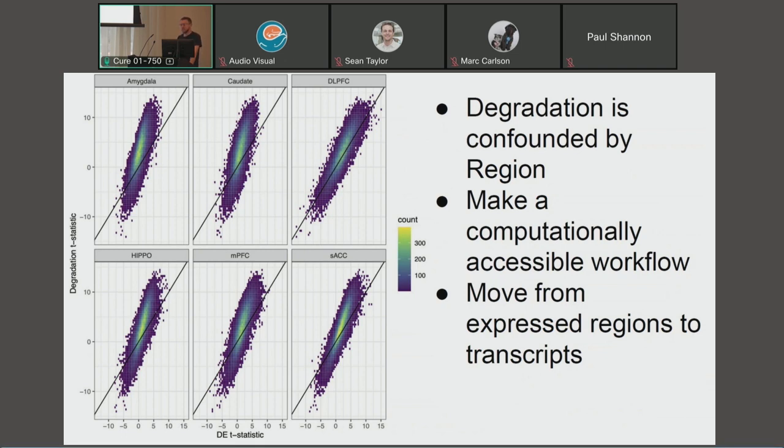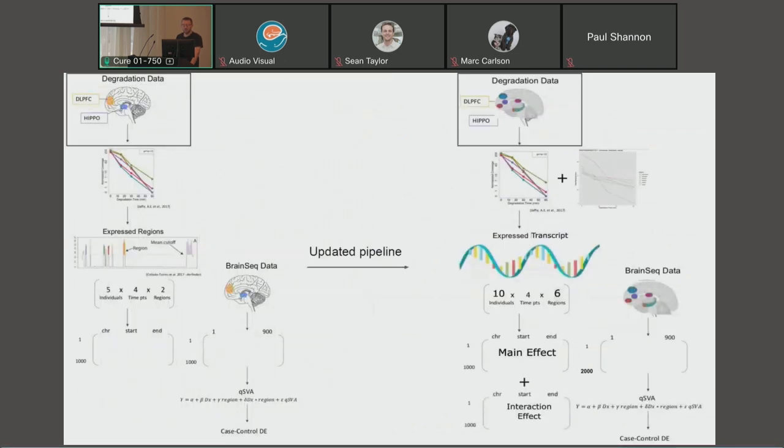Additionally, what I've worked to do is make this computationally more accessible, also known as an R package, and move from exon regions to transcripts because exon regions are really hard to work with. So this is our updated pipeline.